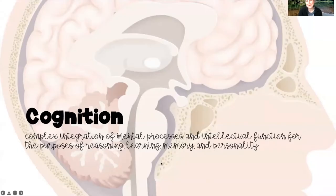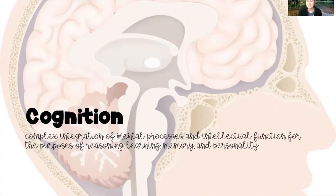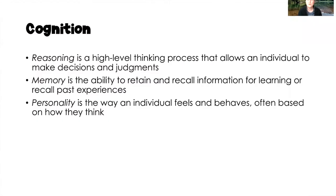As a reminder, this is a back-to-the-basics series in which we're really just trying to understand what is going on inside the body so that we can better assess and manage clients with acute and chronic conditions. Cognition is defined as the complex integration of mental processes and intellectual function for the purposes of reasoning, learning, memory, and personality.